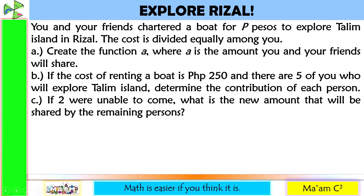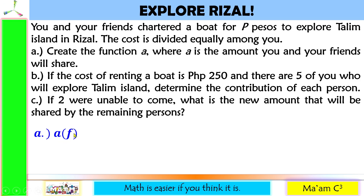Let us explore Rizal. You and your friends chartered a boat for P pesos to explore Talim Island in Rizal. The cost is divided equally among you. For letter A, create the function A where A is the amount you and your friends will share. We'll label it as A of F, where the function A is dependent on the number of friends F. So A of F is equal to P divided by F.